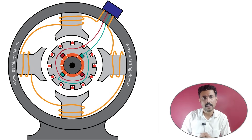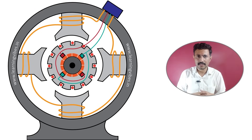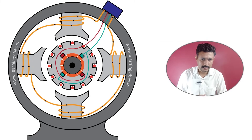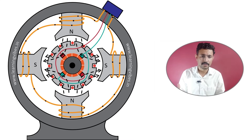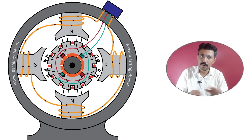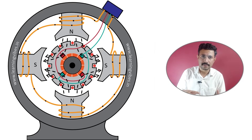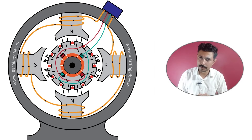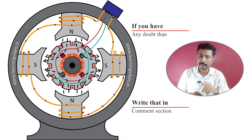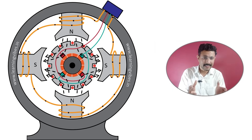Now let's understand the working of the DC generator. To understand the working, we need to give supply to the field winding. Once current starts flowing, it starts producing a magnetic field. When there is no current flowing through the coil, there is no magnetic field — no N pole, no S pole in the generator. But as current starts flowing, according to the direction of current and the magnetic field produced, one pole becomes the N pole and the other becomes the S pole. Now our magnetic field is ready.